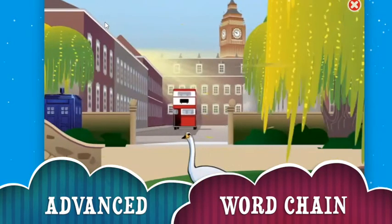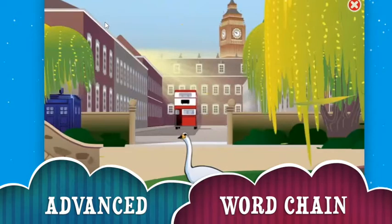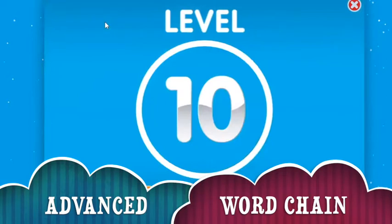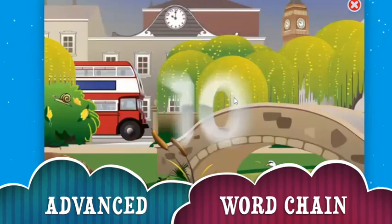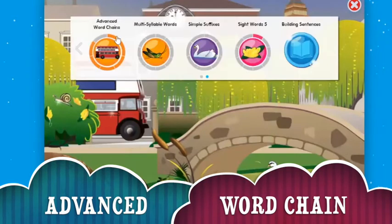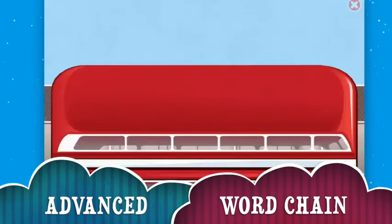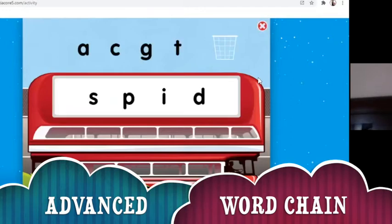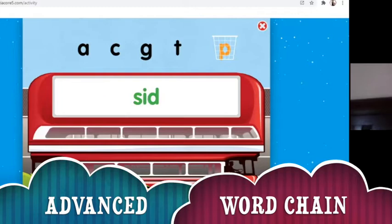You create a chain of words that can be understandable by the kid. Another example: you start from the beginning — 'pan.' If you change the beginning letter, which is P, you can make 'map,' or 'man.' M-A-N instead of P-A-N. So that's what we call the advanced word chain.